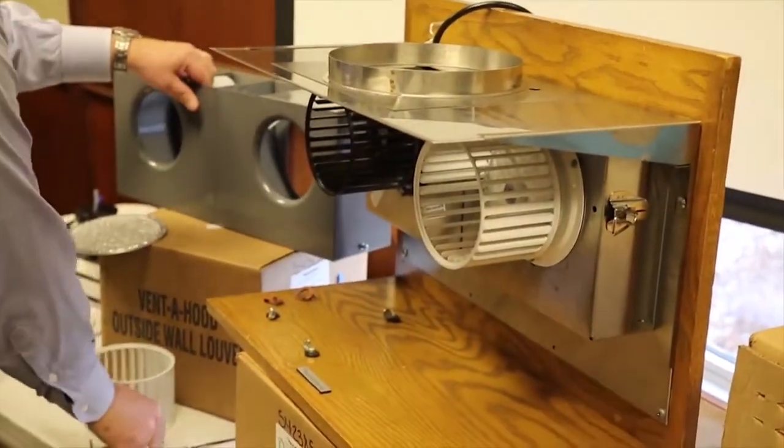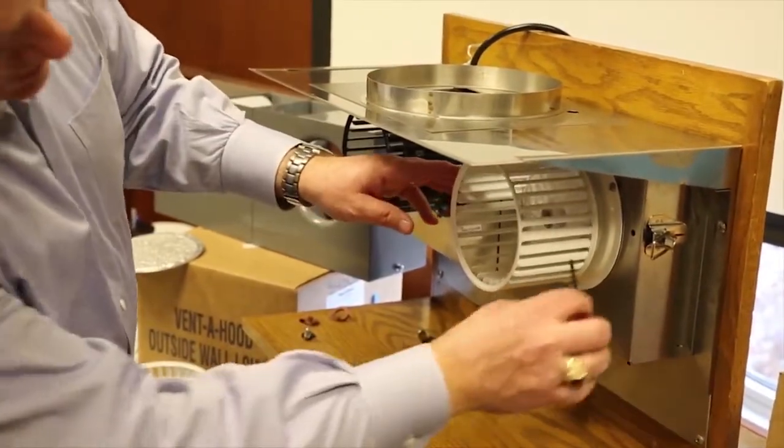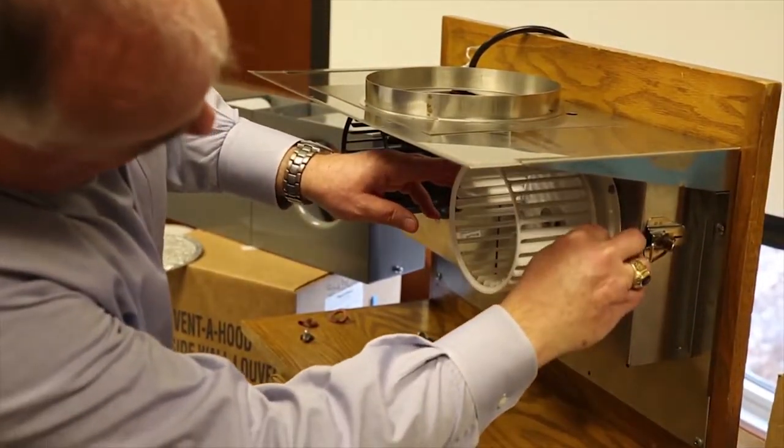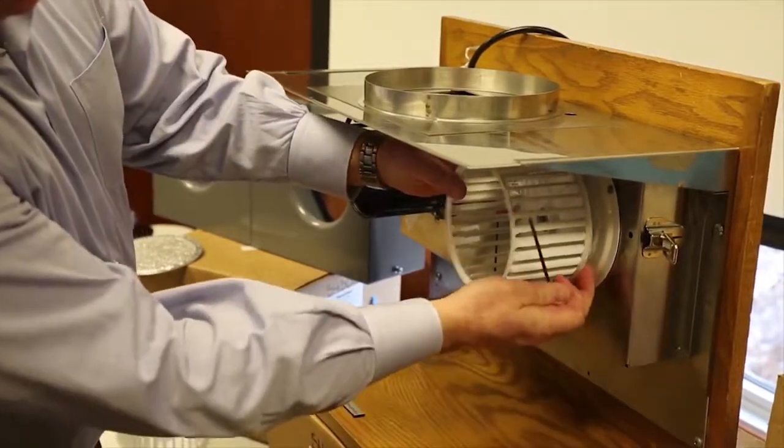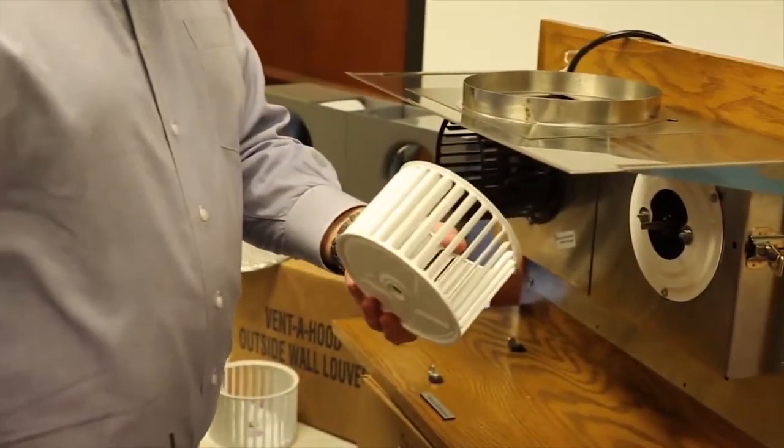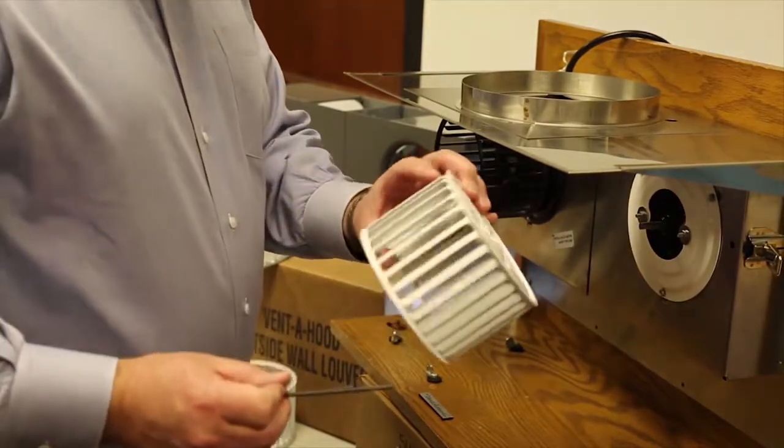There's an Allen wrench that comes with each liner and it goes into the blower wheel like so, into a little set screw. You just undo the set screw and the blower wheel will pull off the motor shaft. It's metal, you can throw it in the dishwasher.